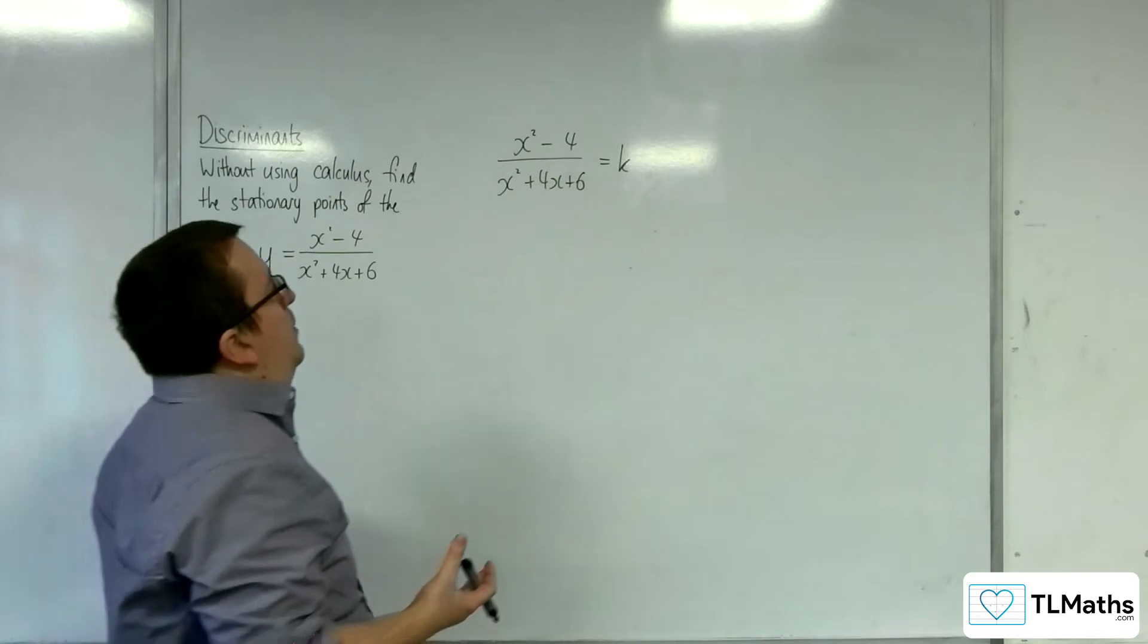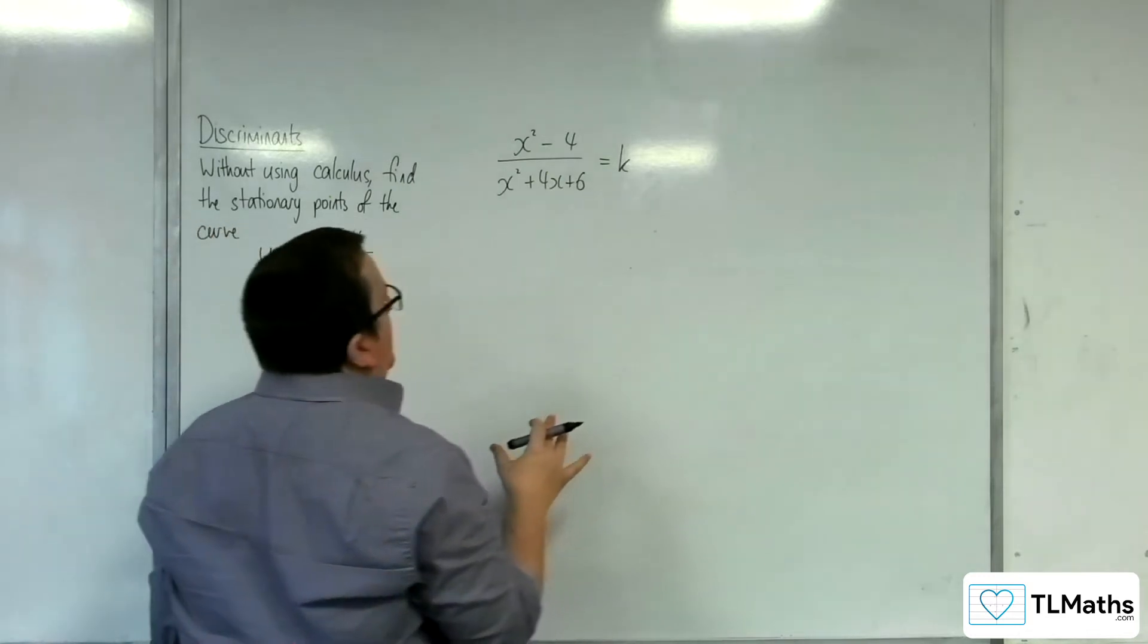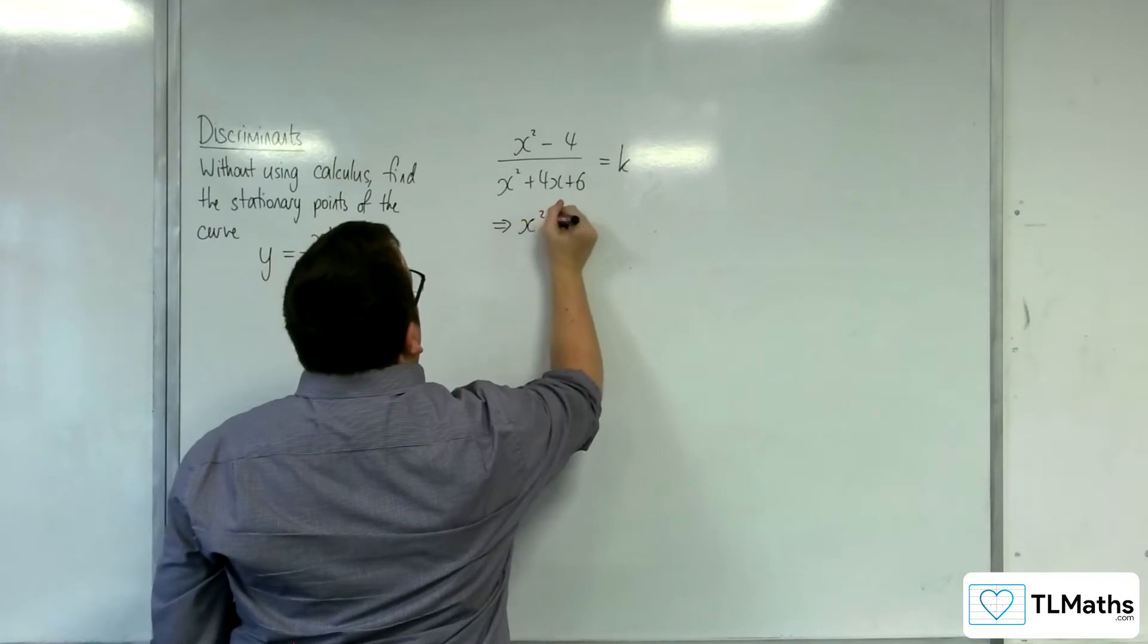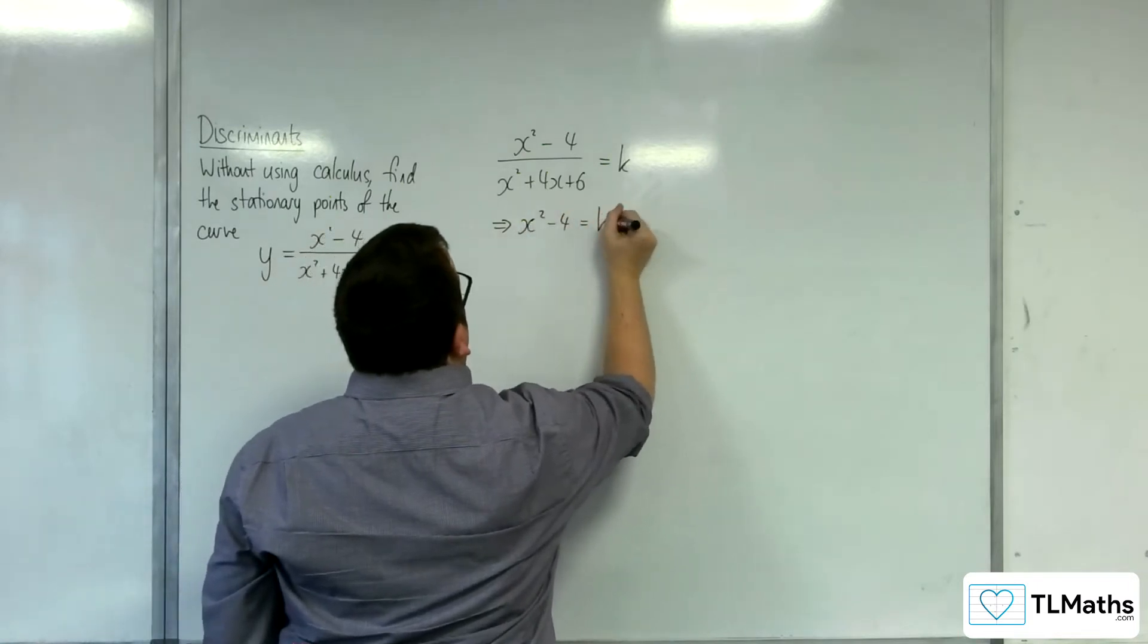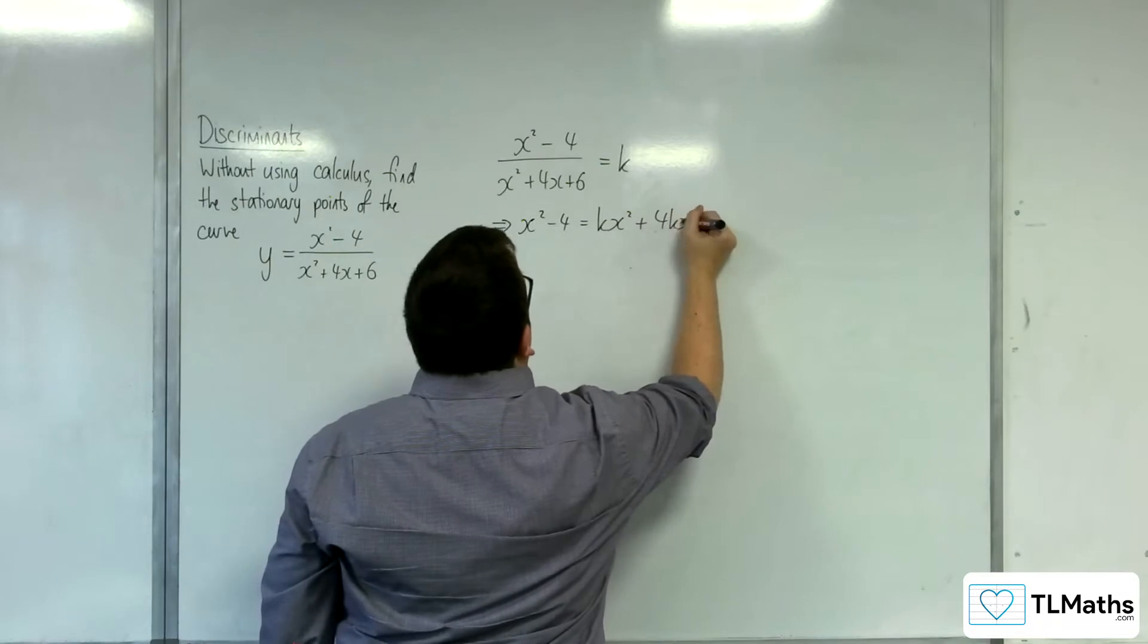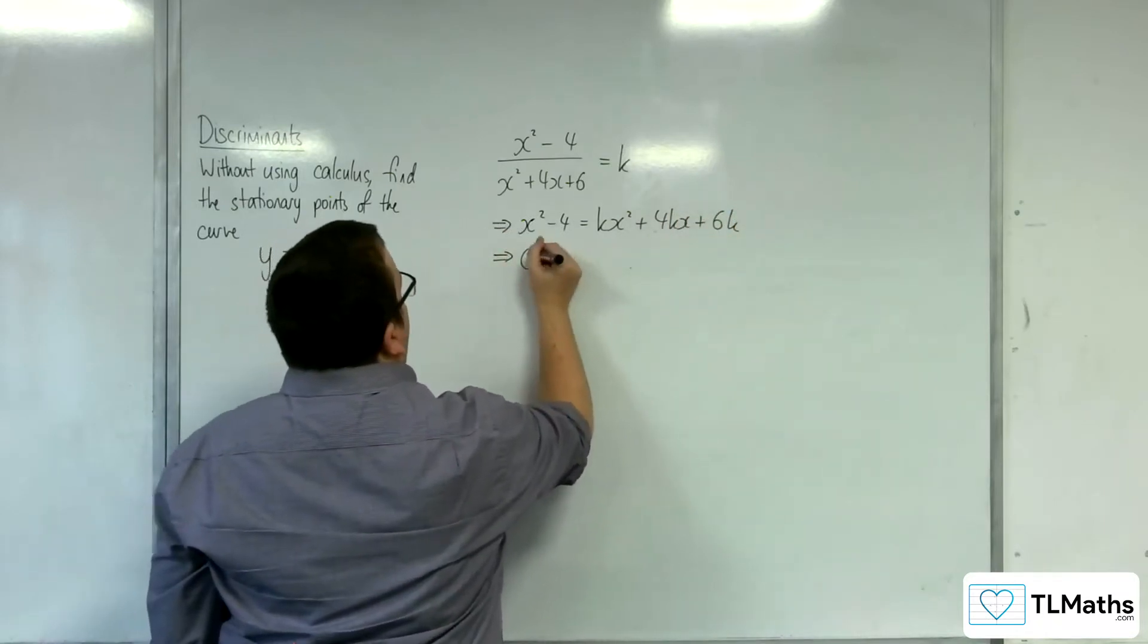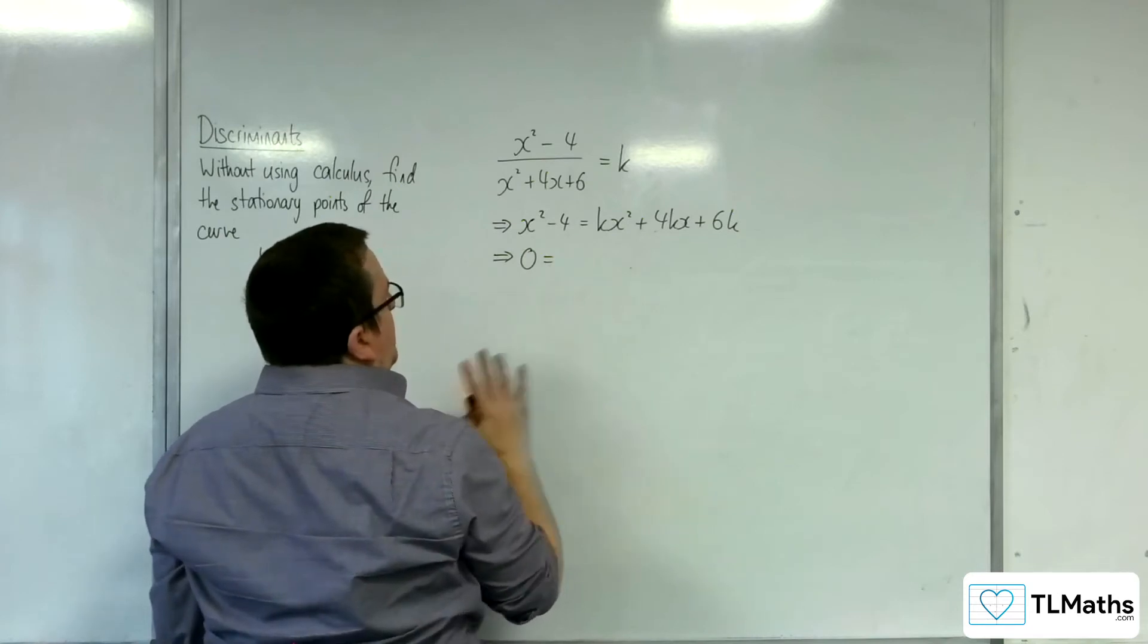So, multiplying up by the x squared plus 4x plus 6, we're going to get x squared take away 4 is equal to kx squared plus 4kx plus 6k. Rearrange to get 0 on the left-hand side, everything else on to the right.